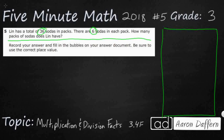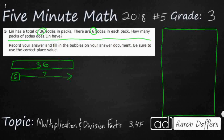One way would be to picture here's my total number of sodas — 36. I've got 6 sodas in each pack, and I don't know how many packs there are — that's the question. So I'm going to put a little box right here that says 6, packs of 6. And this is how we would represent it with a strip diagram: I've got 36 total, and I need to figure out how many packs of 6 I can get until I reach the end of my 36.